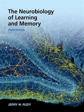5. Types of Memory. The book differentiates between various types of memory, such as declarative memory (explicit memory) and procedural memory (implicit memory). It explores the neural circuits and brain areas responsible for these distinct memory systems.